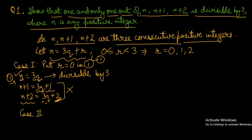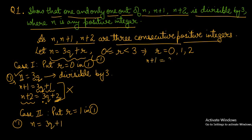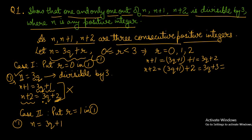We take case number 2. When we put r equal to 1 in line number 1, our first line becomes n is equal to 3q plus 1. If we find out n plus 1, then it will become 3q plus 1 plus 1, which is 3q plus 2. If we find out n plus 2, then it will become 3q plus 1 plus 2, which is 3q plus 3 — and here 3 is common, giving 3 into (q plus 1).